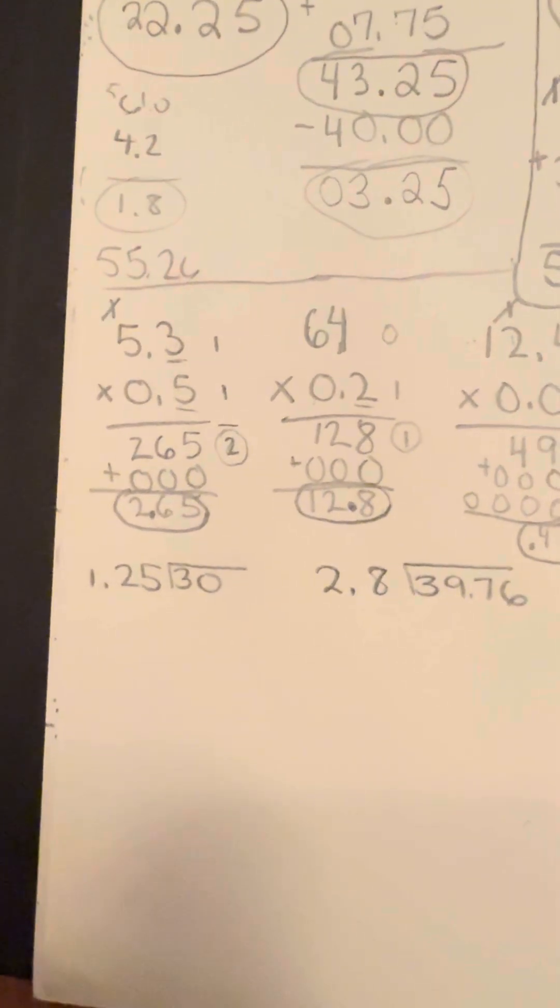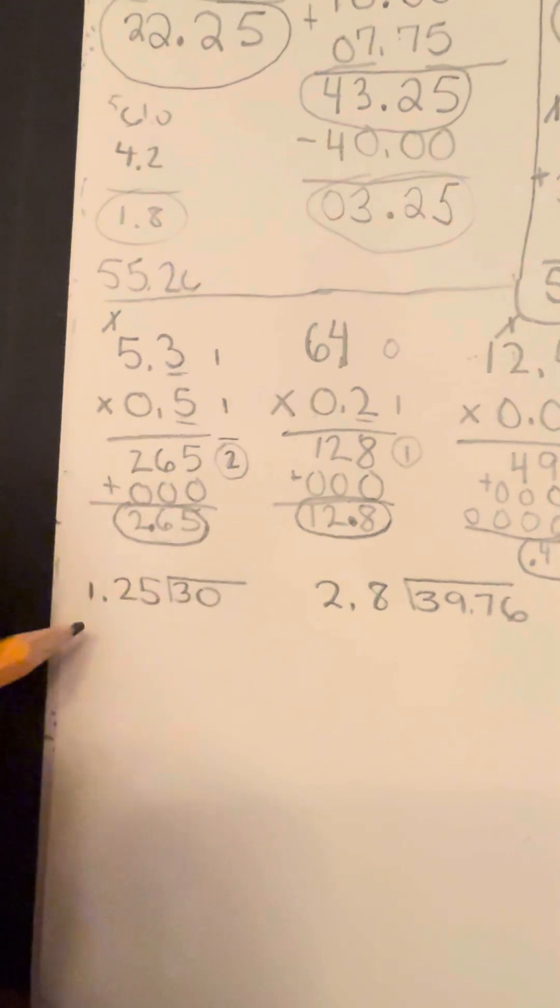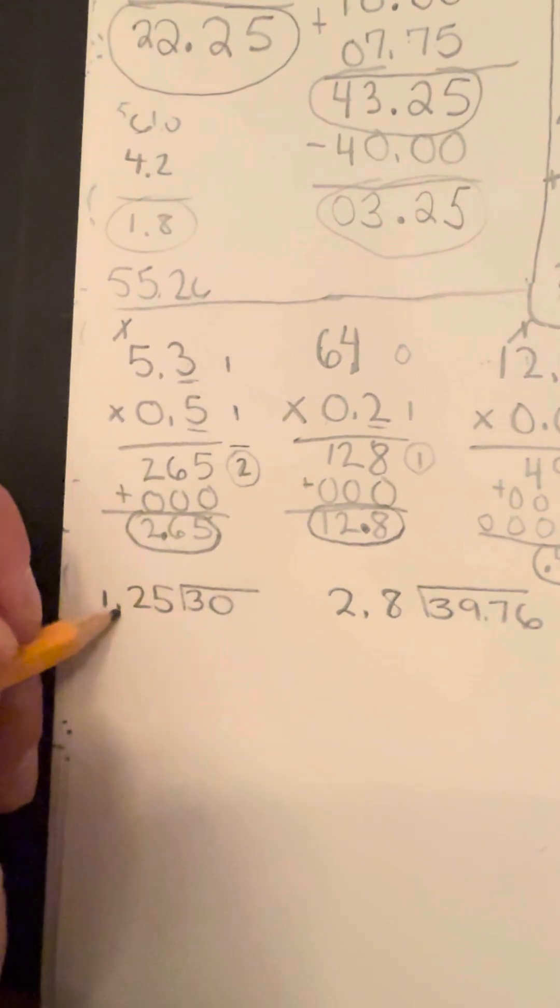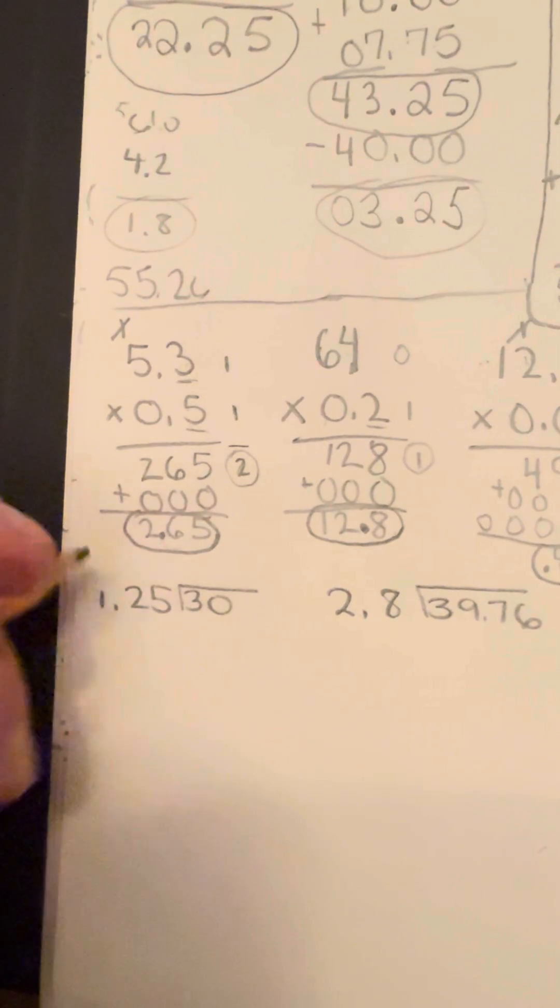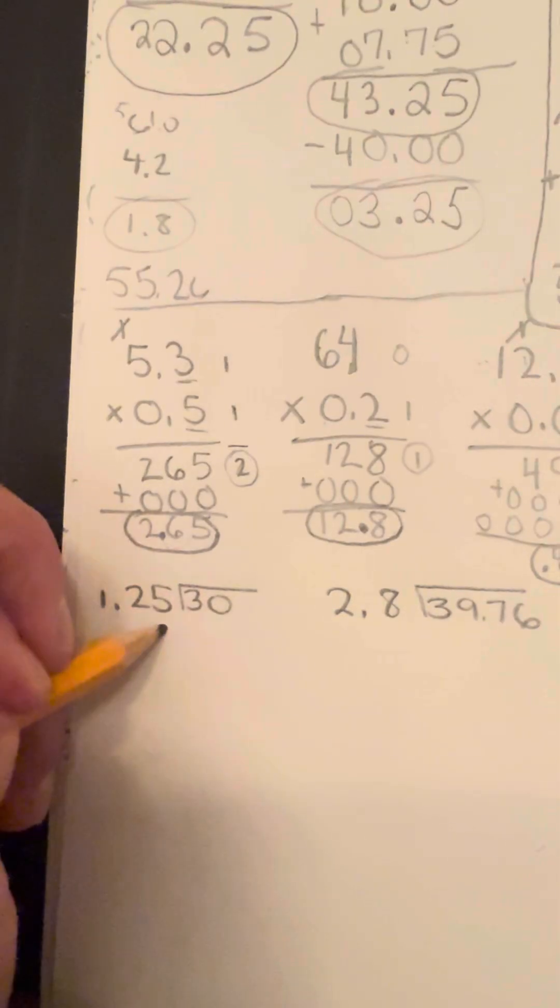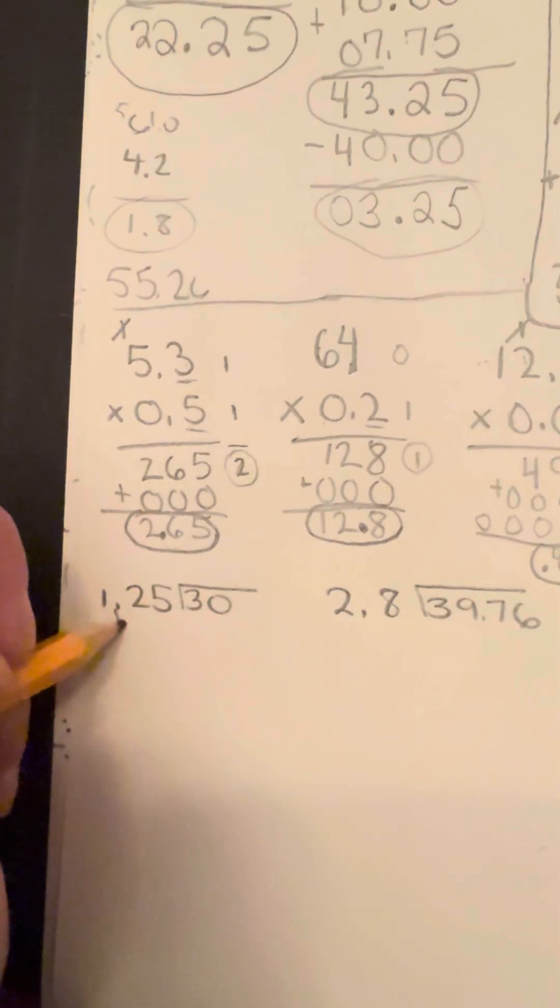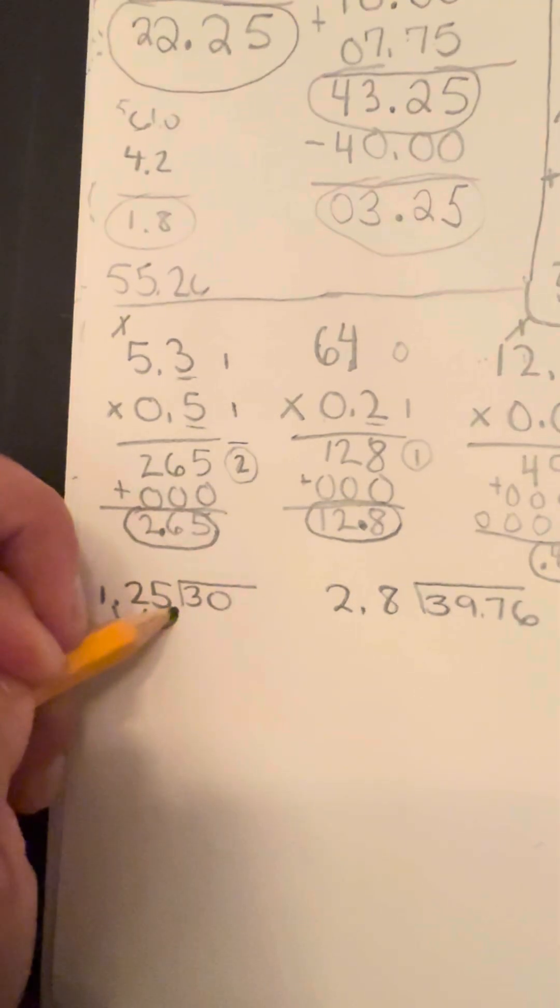So when we have decimals over here, what we're going to do is we're going to take that decimal and we're going to make it so that it's a whole number. By doing that, we're going to have to move the decimal this way to the right. How many spots? One, two.